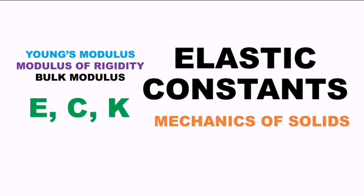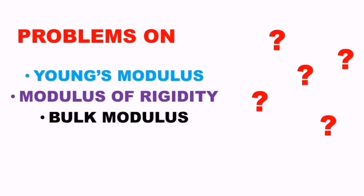Elastic constants are Young's modulus, modulus of rigidity, and bulk modulus. Young's modulus is E, bulk modulus is K, and modulus of rigidity is C or G. This is a very important topic in mechanics of solids or strength of materials. Specially in this video, we are learning how to solve problems on Young's modulus, bulk modulus, modulus of rigidity, and the relationships between those three.